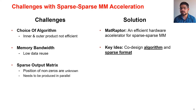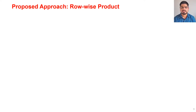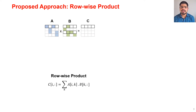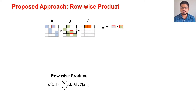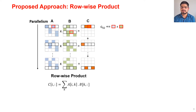To solve these challenges we propose Matraptor, an efficient hardware accelerator for sparse-sparse matrix multiplication. The key idea is the co-design of algorithm and sparse format. For Matraptor we employ a row-wise product approach: we read a non-zero row of matrix A and multiply it with corresponding rows of matrix B to produce a single output row of matrix C. For example, we first read a non-zero value from matrix A whose column index is 0, then index into row 0 of matrix B and perform multiply-accumulate. Then we go to the second non-zero from A, read the corresponding non-zero entries from matrix B, and perform multiply-accumulates to produce the final result.